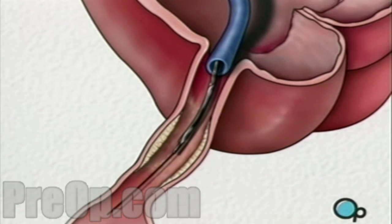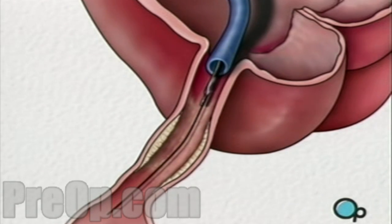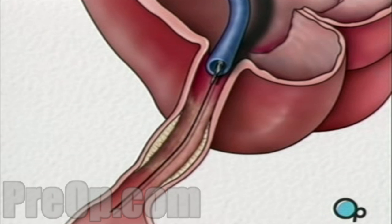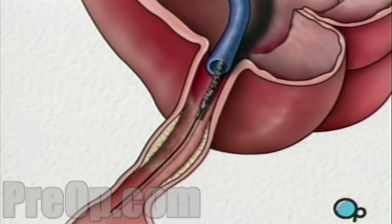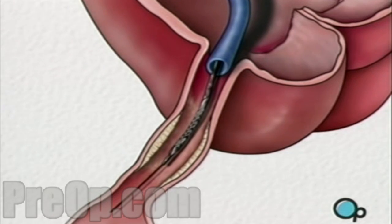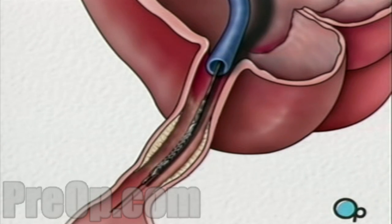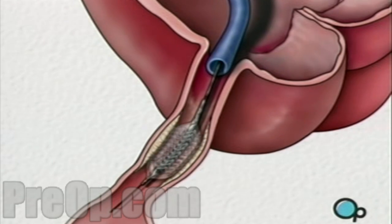The balloon catheter is then withdrawn and another balloon catheter is inserted. This balloon has the mesh stent tube wrapped around it. Once this tube has been placed in the center of the now-widened area of the artery, the balloon is briefly inflated. The stent expands until it hugs the walls of the artery.